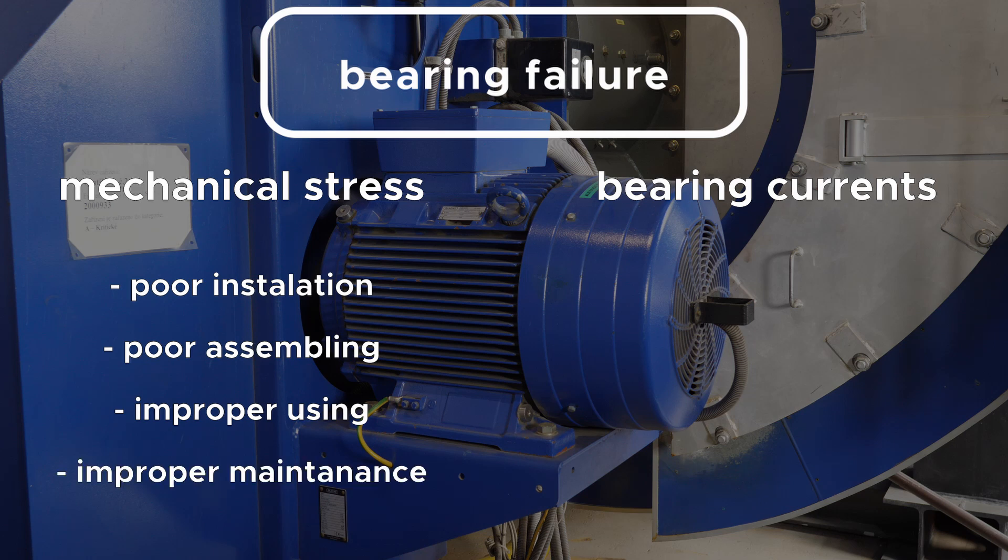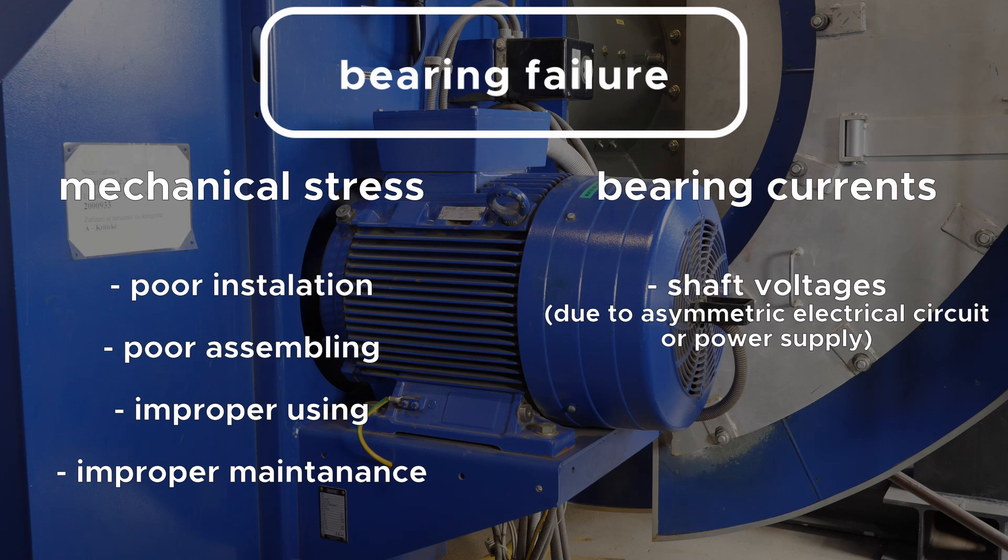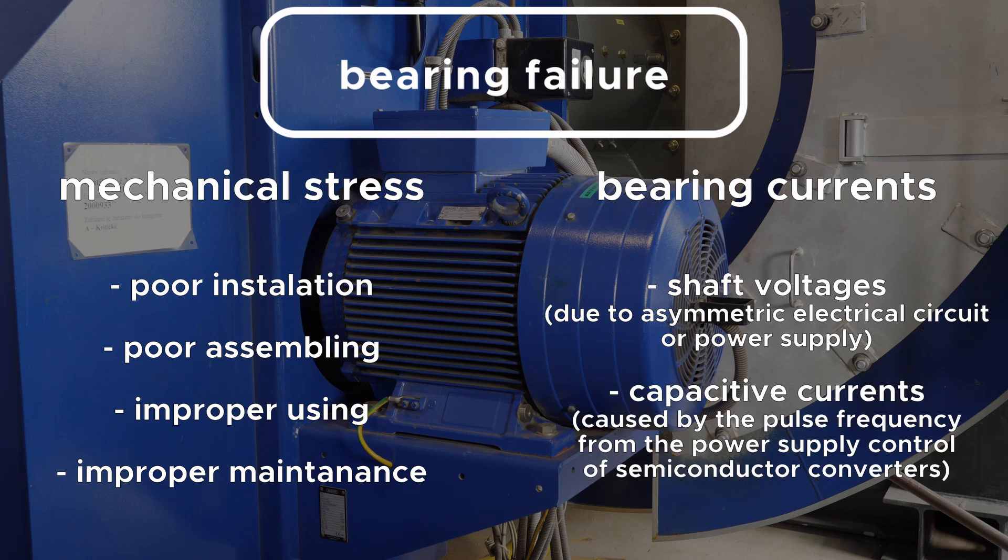The bearing currents can be caused by shaft voltages due to asymmetric electrical circuits or power supplies and capacitive currents caused by the pulse frequency from the power supply control of semiconductor converters.